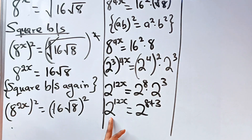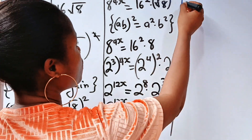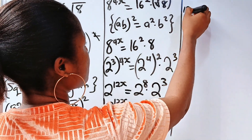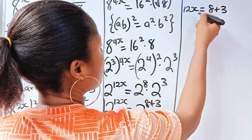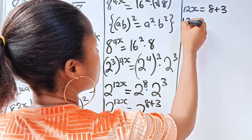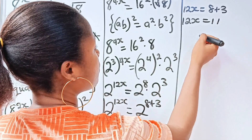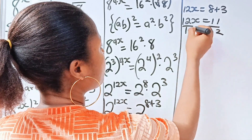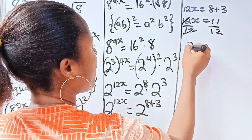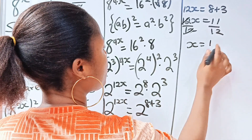Since they share the same base, their powers are equal. So we have 12x is equal to 8 plus 3. That gives 12x equals 11. Dividing both sides by 12, x equals 11 over 12.